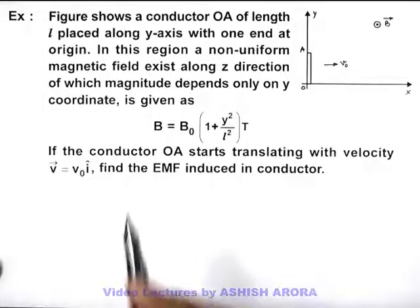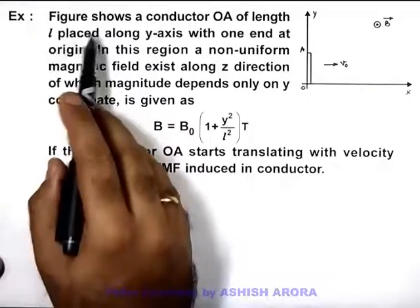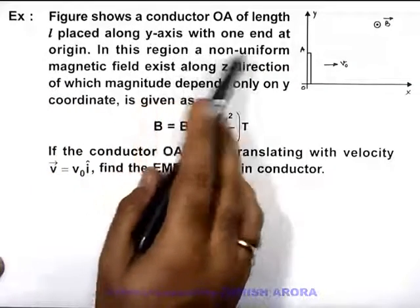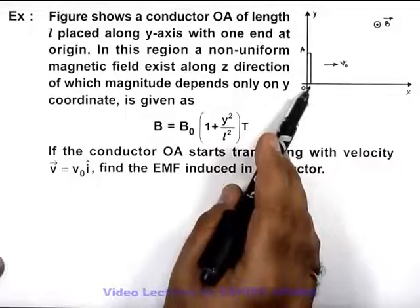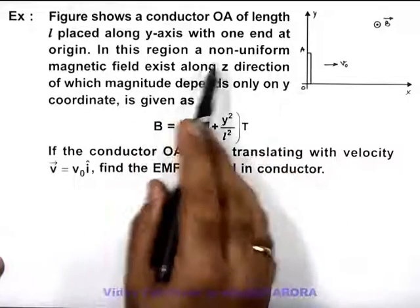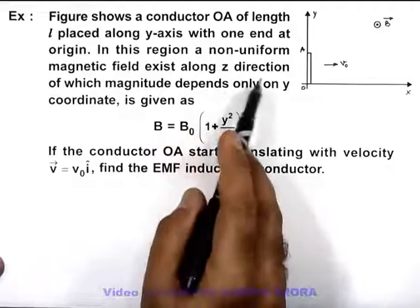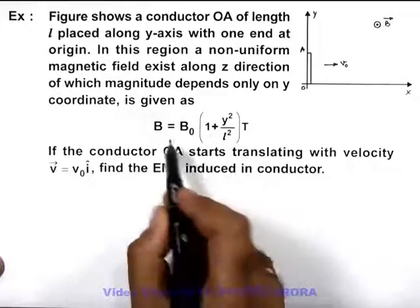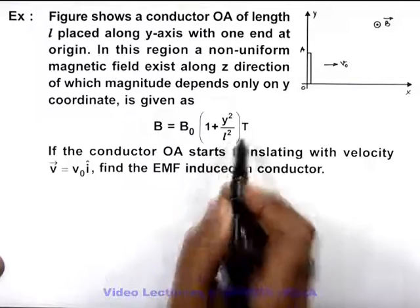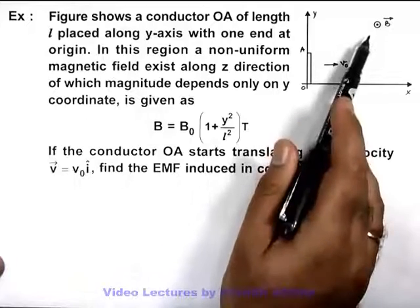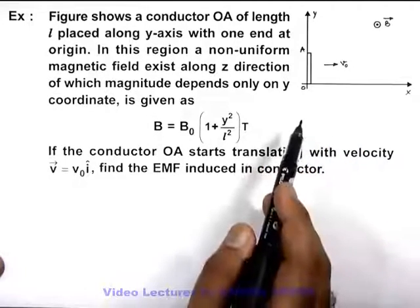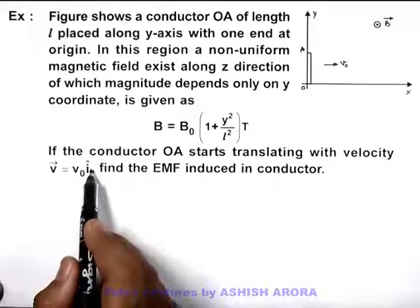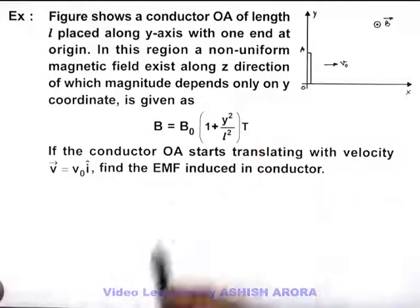In this example, the figure shows a conductor OA of length L placed along the Y-axis with one end at the origin. In this region, a non-uniform magnetic field exists along the Z direction, of which magnitude depends only on Y coordinate, given as B = B₀(1 + y²/l²) Tesla. If the conductor OA starts translating with velocity V₀ î, we are required to find the induced EMF in this conductor.